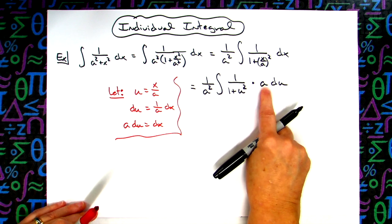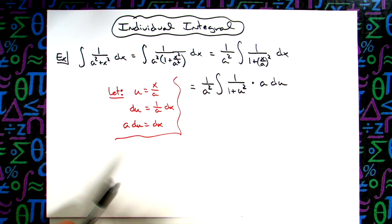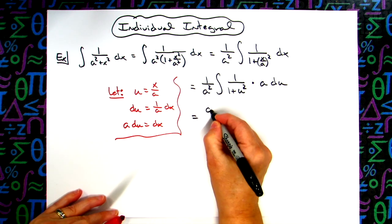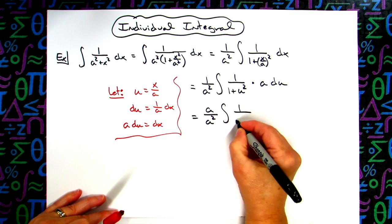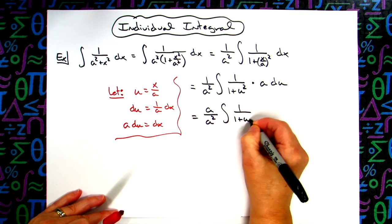All right, at this point I'm going to take the a and pull it out in front. When we pull that out in front, then I'll have a over a squared. The integral of 1 over 1 plus u squared du.